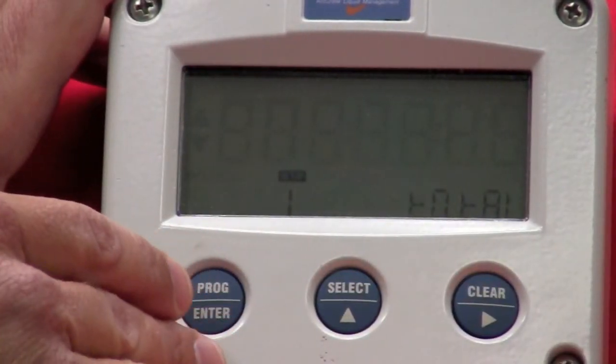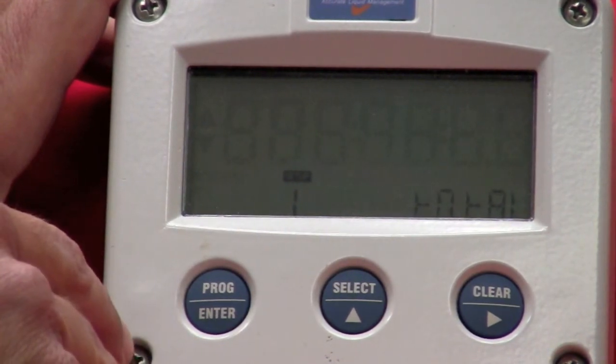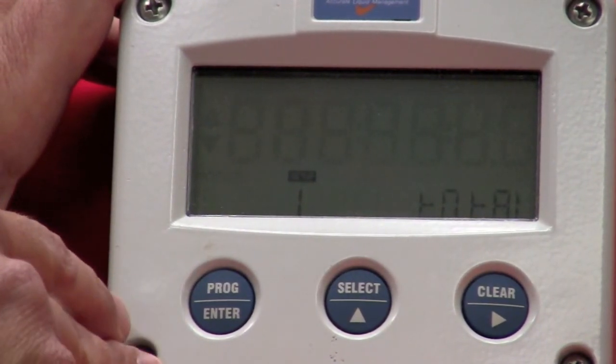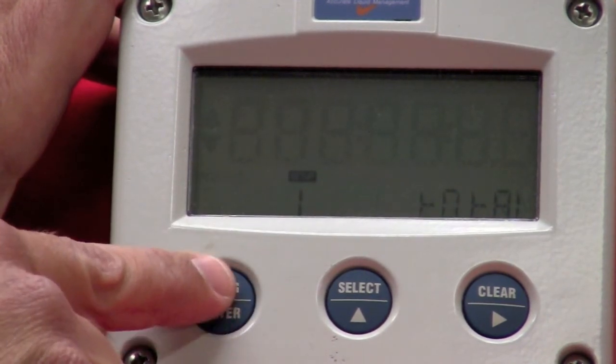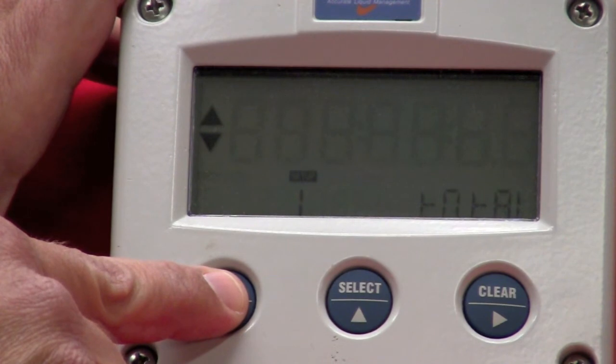To jump out of programming, there's two ways to do it. One is to let the unit time out, which takes two minutes before it will go back to the run mode. Or a quicker way is just hold in your programming key for two seconds, and it will return back to the run mode.